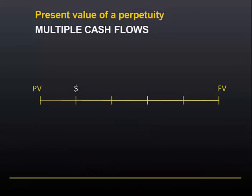In previous modules we've looked at how we can calculate the present value or future value of any cash flow, including a series of cash flows. We found that we have to multiply or divide each cash flow by the interest rate factor 1 plus R to the power of the number of periods that we need to move that cash flow forward or backward in time.